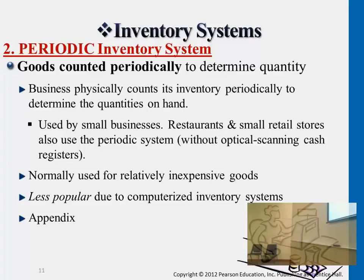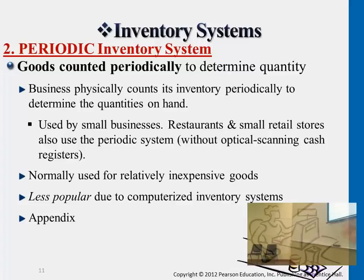They double check the inventory level at a certain period of time — it could be a day or a few days — to keep track of the inventory level and then update it all together at the same time. This is less frequent nowadays since technology is more prevalent. Usually it's only for small businesses whose budget does not allow a full system, such as restaurants and small local retail stores, that will still be using the periodic inventory system.